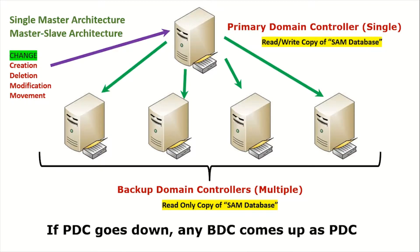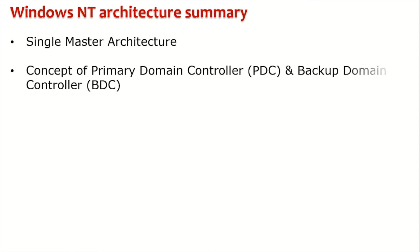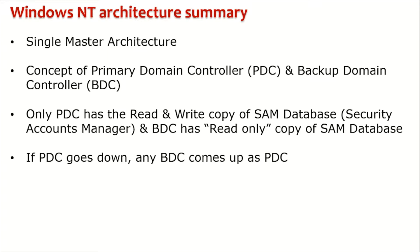If the Primary Domain Controller goes down, any Backup Domain Controller can come up as the Primary Domain Controller. To summarize the Windows NT architecture: it is a single master architecture with the concept of a Primary Domain Controller and Backup Domain Controllers. Only the PDC has a read-write copy of the SAM database, while Backup Domain Controllers have read-only copies. If the PDC goes down, any Backup Domain Controller takes over as the Primary Domain Controller.